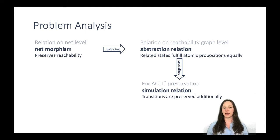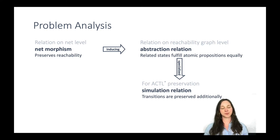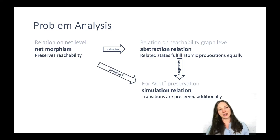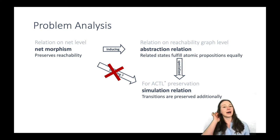If we want to verify in the skeleton and then transfer results to the colored Petri Net, we need to guarantee a simulation between the two reachability graphs. The question is: does the net morphism between the colored net and the skeleton directly induce this simulation relation? The answer is no. The problems are caused by deadlocks which a net can have.